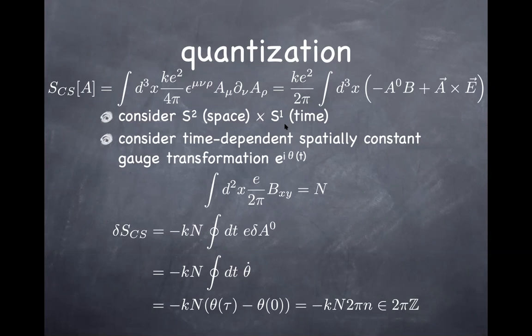In this setup, consider a gauge transformation on the Chern-Simons term that is time-dependent but spatially constant. The gauge parameter e^(iθ) depends on t but not on x. We also know from this morning's discussion that when you integrate the magnetic field together with one factor of e over 2π, that is always supposed to be an integer — this is always true by the index theorem. So this combination of the integral is simply given by an integer N. When you consider this spatially independent gauge transformation, the only thing that changes is the time component of the gauge field — the scalar potential changes by (1/e) θ-dot.